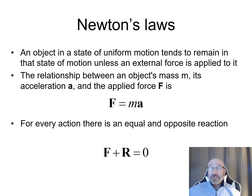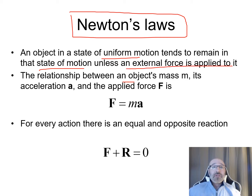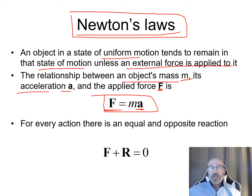There are a couple of laws that become important. The main one is Newton's Laws. Newton's Second Law states an object in uniform motion tends to remain in that state unless an external force is applied. We have F = MA, where F is force (a vector), M is mass, and A is acceleration. Newton's Third Law — every action has an equal and opposite reaction — gives us F + R = 0, important when looking at supports and joints.